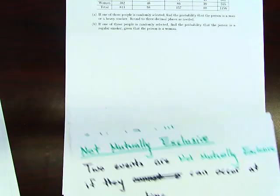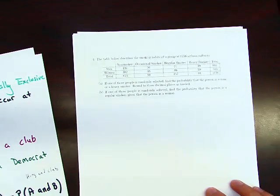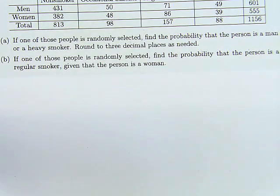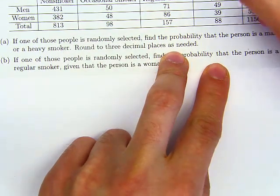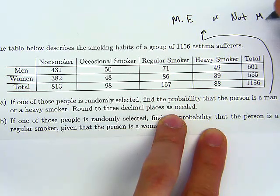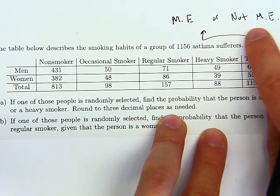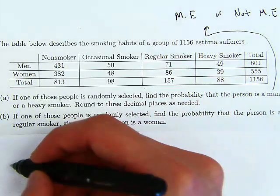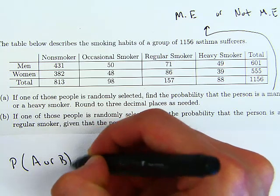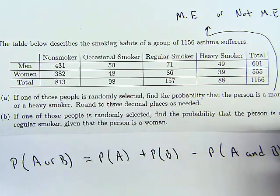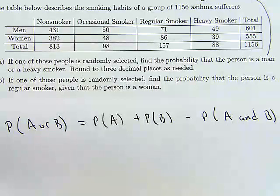Now back to our problem: if one of these people is randomly selected, what's the probability that the person is a man or a heavy smoker? Is this mutually exclusive or not? This is not mutually exclusive because a person could be a man and also a heavy smoker. So we use the formula: P(A or B) = P(A) + P(B) − P(A and B).